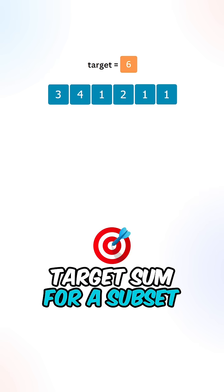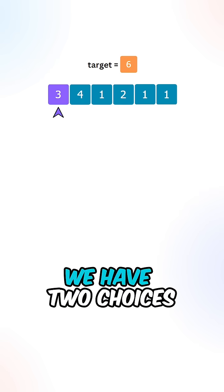Now after finding the target sum for a subset, for each of the elements inside the array, we have two choices.